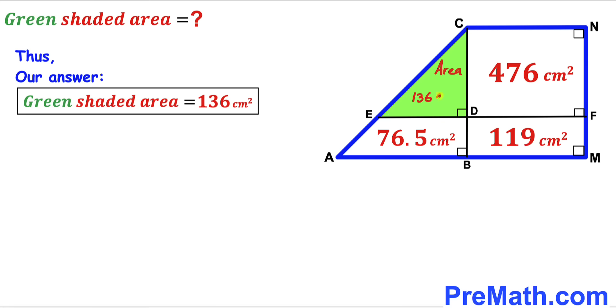The area of the green shaded triangle is 136 cm², and that's our final answer. Thanks for watching and please don't forget to subscribe to my channel for more exciting videos. Bye!